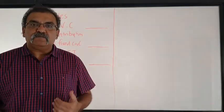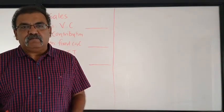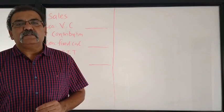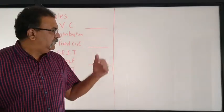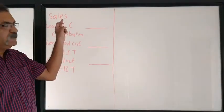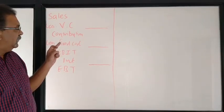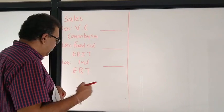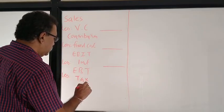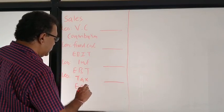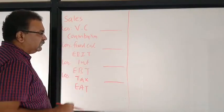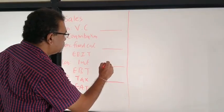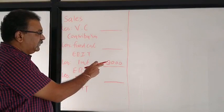What is asked of us is to prepare the income statement. In this example, we are not asked to calculate operating leverage or financial leverage - these are readily given to us. The income statement format is: Sales minus Variable Cost equals Contribution; Contribution minus Fixed Cost equals EBIT; EBIT minus Interest equals EBT; EBT minus Tax equals Earnings After Tax. The only amount directly given is Interest - for Sure Limited, interest is Rs. 3000.